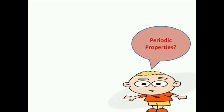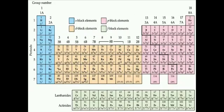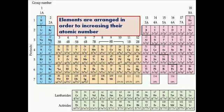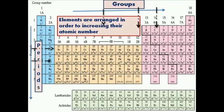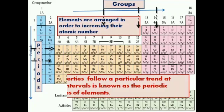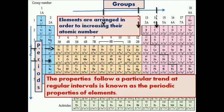In the modern Periodic Table, or long form of Periodic Table, elements are arranged in order of increasing atomic number. Vertical columns are known as Groups, and horizontal rows are known as Periods. The properties follow a particular trend at regular intervals, and these properties are known as Periodic Properties.